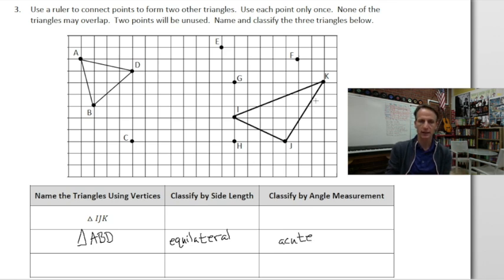The one that they gave us, IJK - if you look at the three side lengths, by all appearances it is scalene. All three are different, and we have one angle that is greater than a right angle, so this would be obtuse.